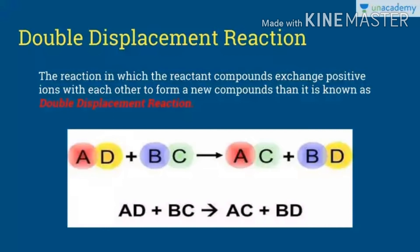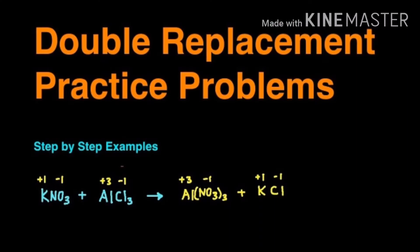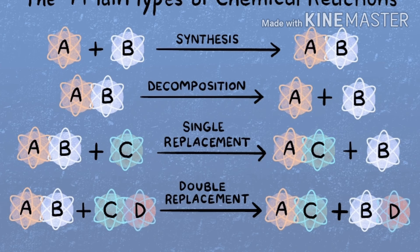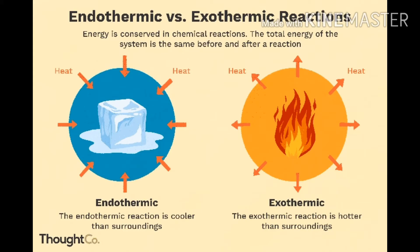The fourth type of reaction is double decomposition reaction. The chemical reaction in which atoms or ions mutually exchange their places is called double decomposition reaction. Here are a few examples of double decomposition reaction.